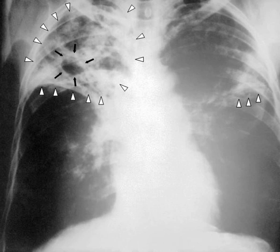People with this disseminated TB have a high fatality rate even with treatment. In many people, the infection waxes and wanes. Tissue destruction and necrosis are often balanced by healing and fibrosis. Affected tissue is replaced by scarring and cavities filled with caseous necrotic material. During active disease, some of these cavities are joined to the air passages and this material can be coughed up — it contains living bacteria, and thus can spread the infection. Treatment with appropriate antibiotics kills bacteria and allows healing to take place. Upon cure, affected areas are eventually replaced by scar tissue.